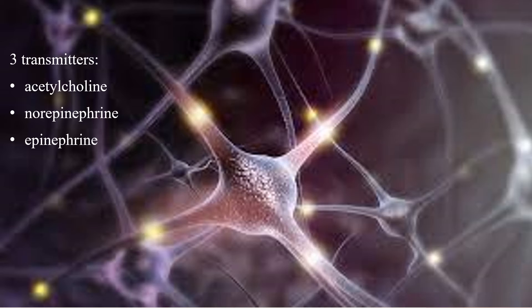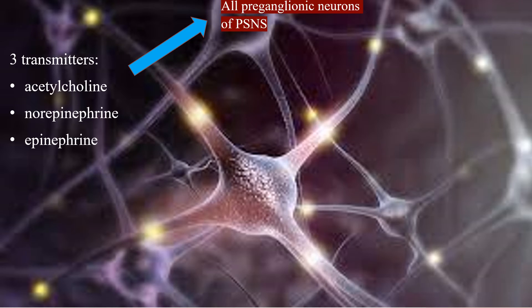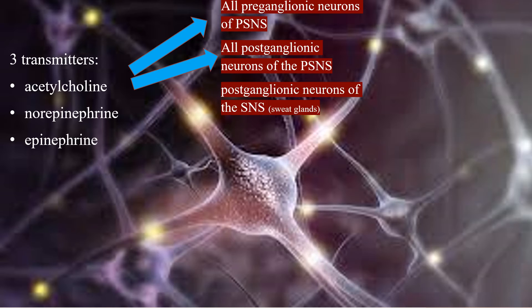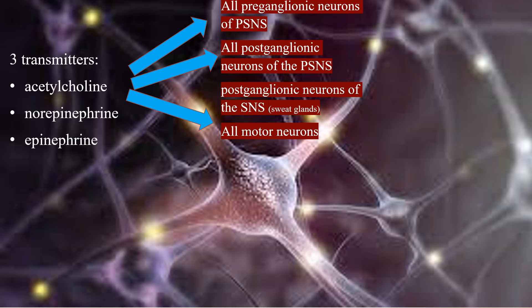The peripheral nervous system employs three transmitters: acetylcholine, norepinephrine, and epinephrine. Acetylcholine is the transmitter released by all preganglionic neurons of both the sympathetic and parasympathetic nervous systems. It is also the transmitter for all postganglionic neurons of the parasympathetic nervous system, as well as the postganglionic neurons of the sympathetic nervous system that go to the sweat glands, and all motor neurons.